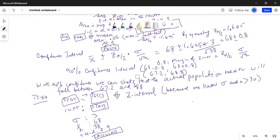The answer is same as before. 67.2, 68.8. With 90% confidence, we can state that the actual population mean will fall between 67.2 and 68.8. Same result as we got.